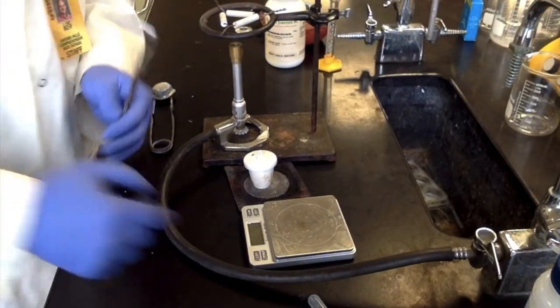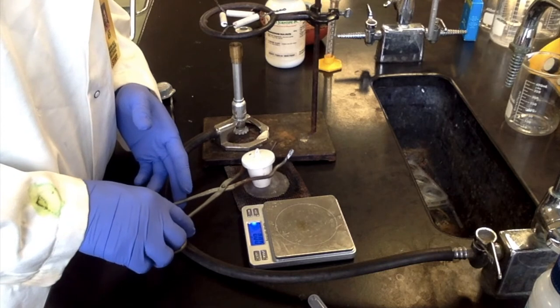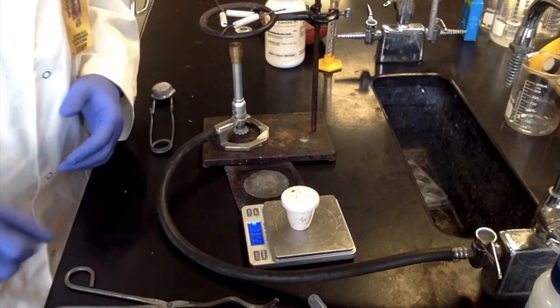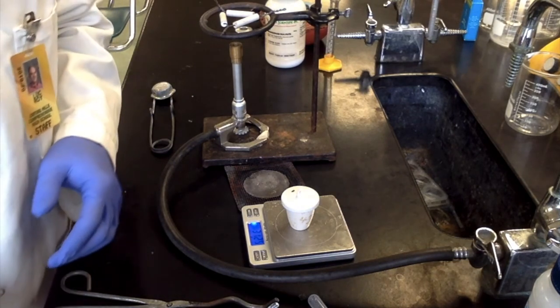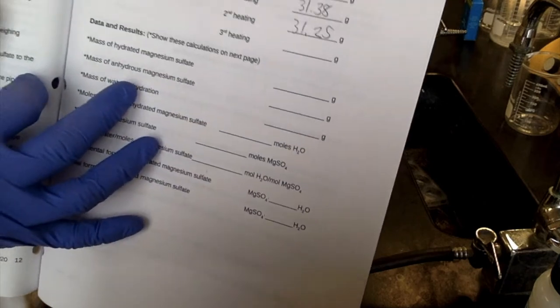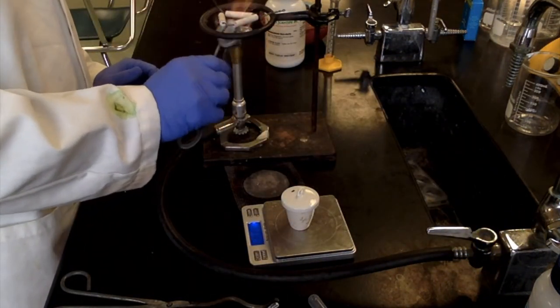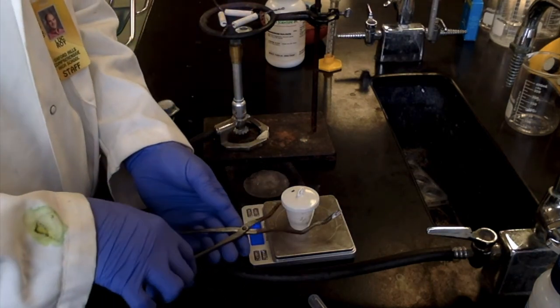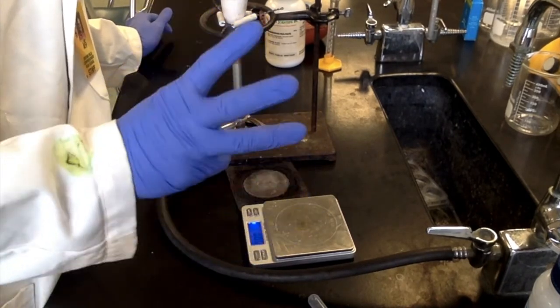All right. So it's been five minutes of it cooling after the second heating. Let's get a mass measurement. All right. Scale zeroed out. Carefully pick this up. So we're at 31.23. Oh, it's changing. 31.25. We had 31.38 before. So we will have to go for a third and final heating just to dry it out. So we'll get our Bunsen burner going again. And place our crucible in flame.